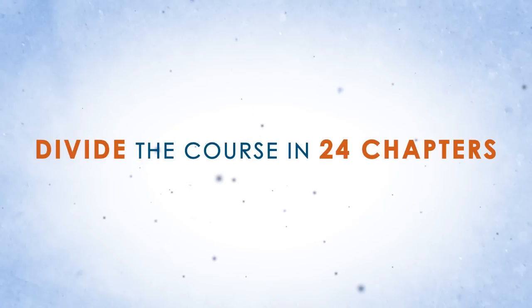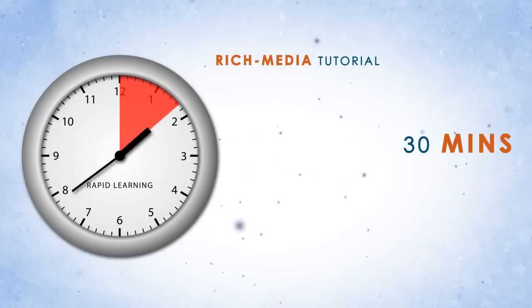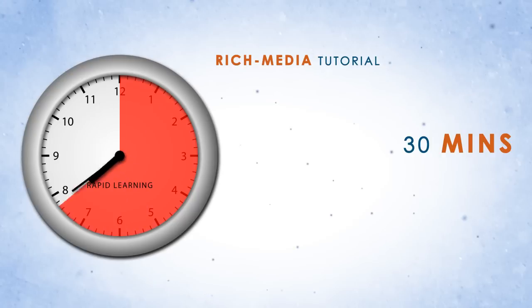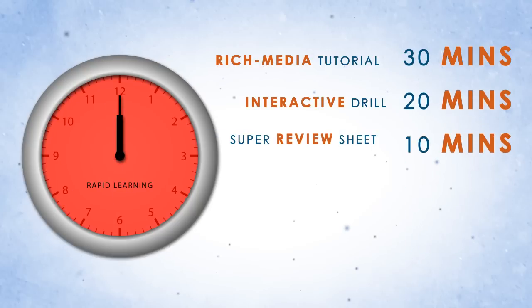The Rapid Learning System divides the course into 24 chapters with one hour study time per chapter. It takes 30 minutes for the rich media tutorial, 20 minutes for the problem drill, and 10 minutes to recap the chapter with a super review sheet.